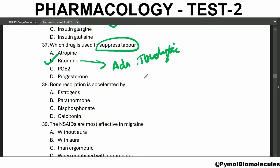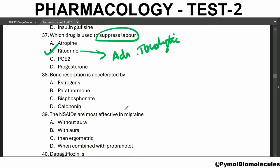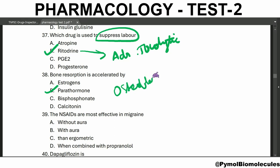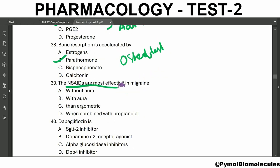Bone resorption is accelerated by parathormone. Parathormone increases the resorption of calcium from bone, and parathormone receptors are expressed on the surface of osteoblasts. NSAIDs are most effective in migraine without aura.